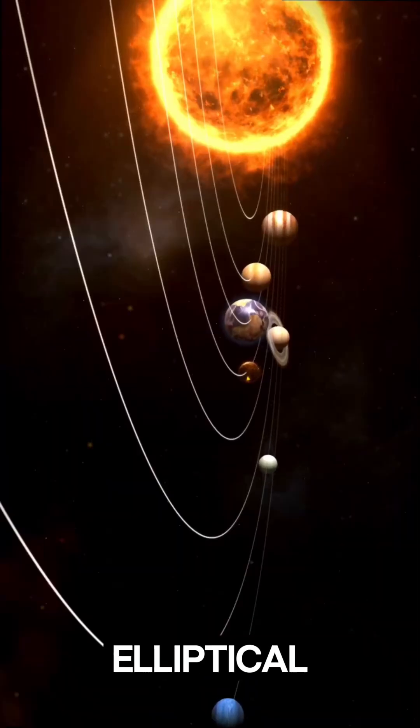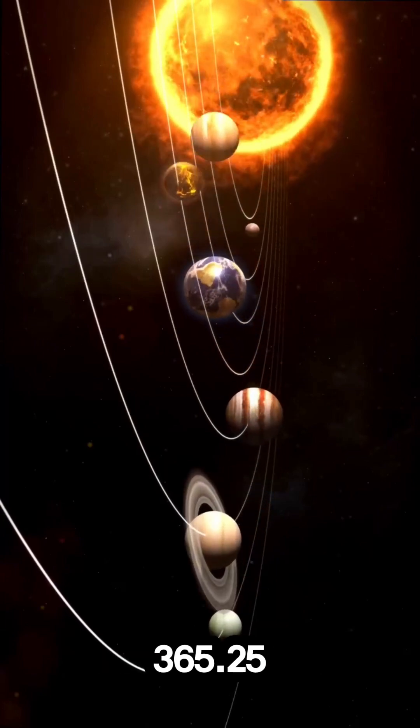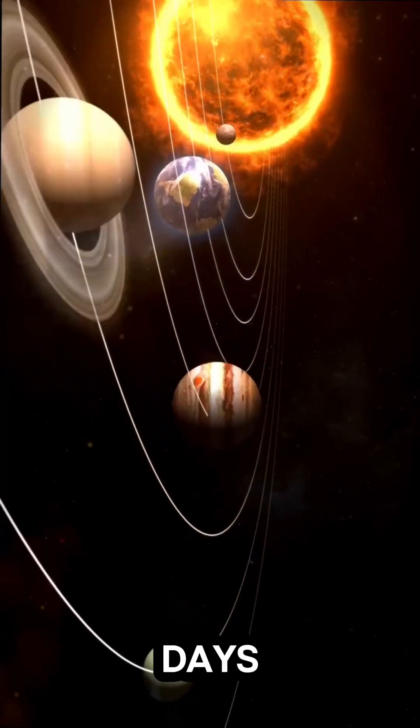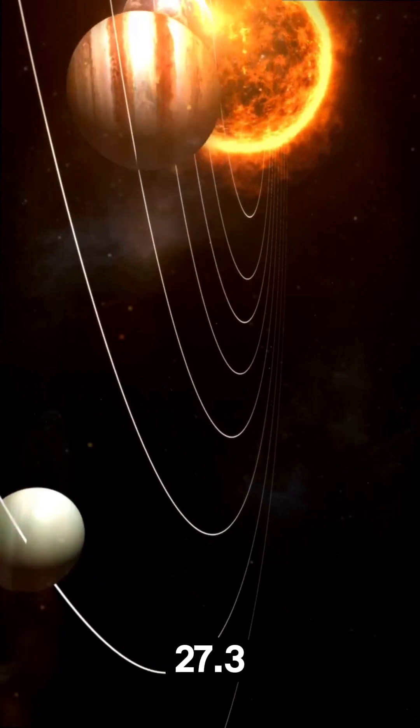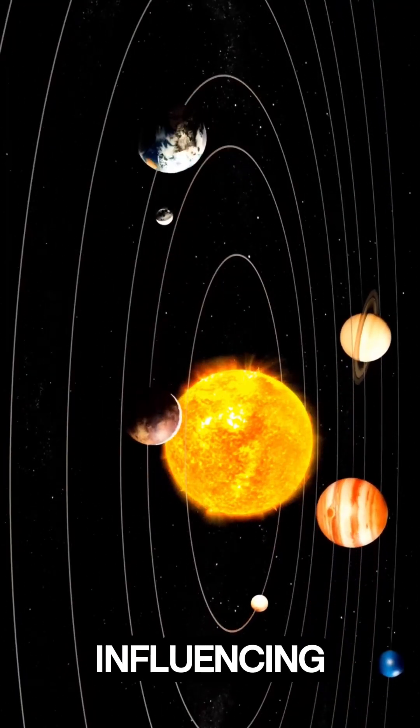Earth orbits the sun in an elliptical path, completing one revolution in about 365.25 days, while the moon orbits Earth every 27.3 days, causing lunar phases and influencing tides.